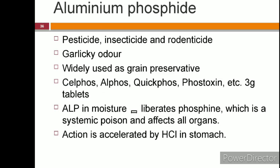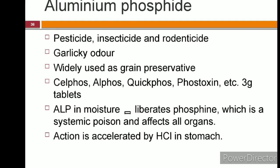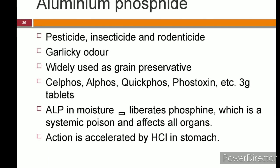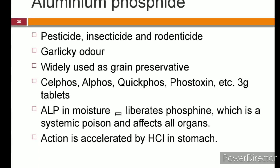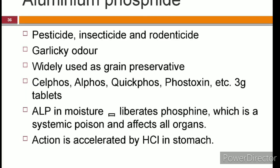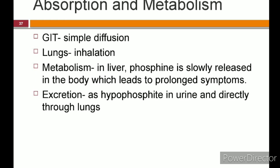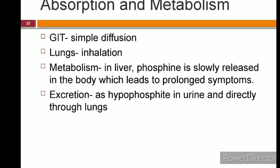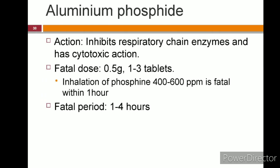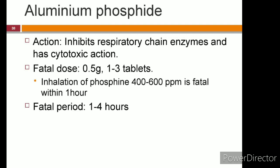Aluminium phosphide is used as a pesticide, rodenticide, and insecticide, and is widely used as a grain preservative. In India, it is available as white tablets of Sylphos, Alphos, Quickphos, etc., each weighing 3 grams, which liberates 1 gram of phosphine. When aluminium phosphide comes in contact with moisture, it releases phosphine — a systemic poison affecting all parts of the body. This reaction is accelerated by hydrochloric acid in the stomach. Aluminium phosphide has a garlicky odor. It is absorbed by ingestion or inhalation, metabolized in the liver, and excreted in urine as hypophosphite, and also excreted unchanged through the lungs. Phosphine inhibits respiratory chain enzymes and cytochrome oxidase. The fatal dose is 0.5 gram (1 to 3 tablets); inhalation at 400–600 ppm is fatal within 1 hour.